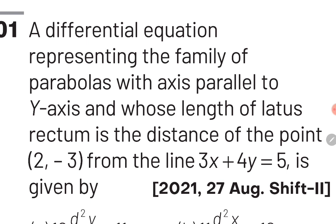The fourth question of this chapter is: a differential equation representing the family of parabolas with axis parallel to the y-axis and whose length of latus rectum is the distance of the point (2, -3) from the line 3x + 4y = 5. In this question, we first write the equation of the system of parabolas with axis parallel to y-axis: (x - h)² = 4a(y - k). We take the derivative of this equation two times because there are two unknown constants h and k. The value of 4a equals the length of latus rectum, which is the perpendicular distance from the point (2, -3) to the line 3x + 4y = 5.